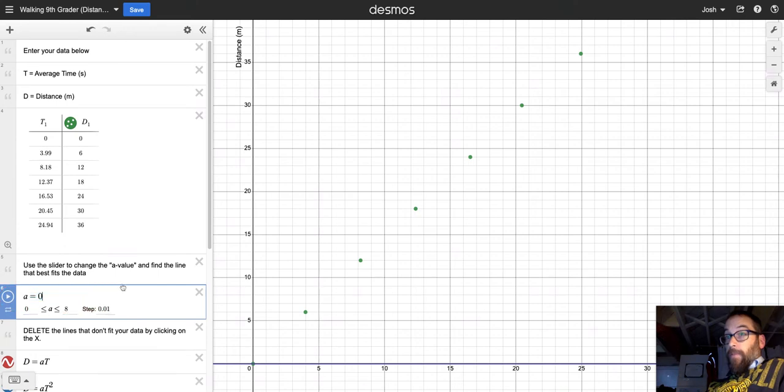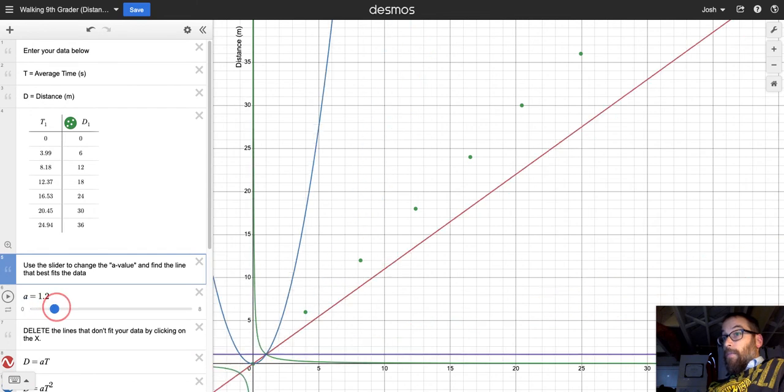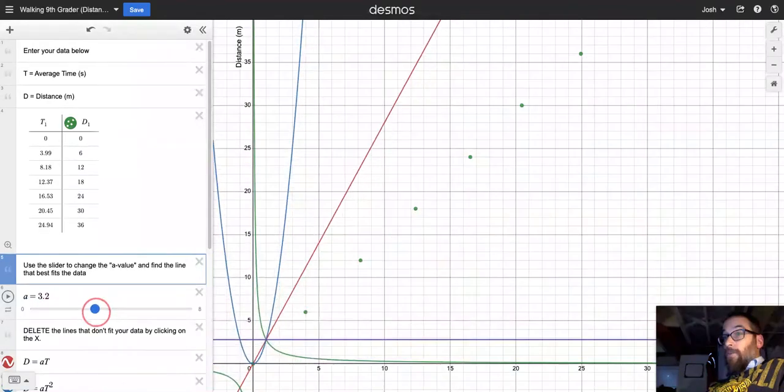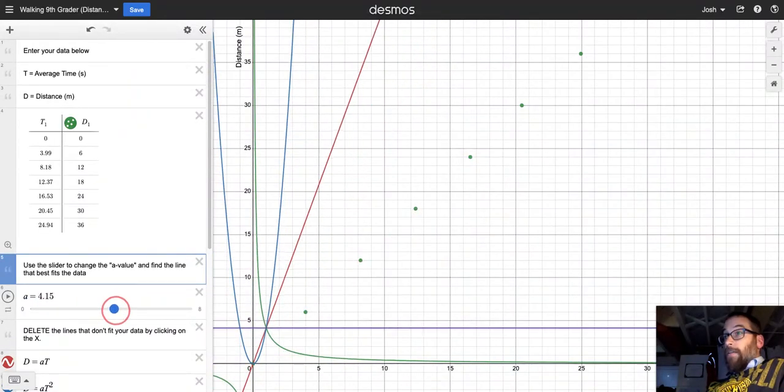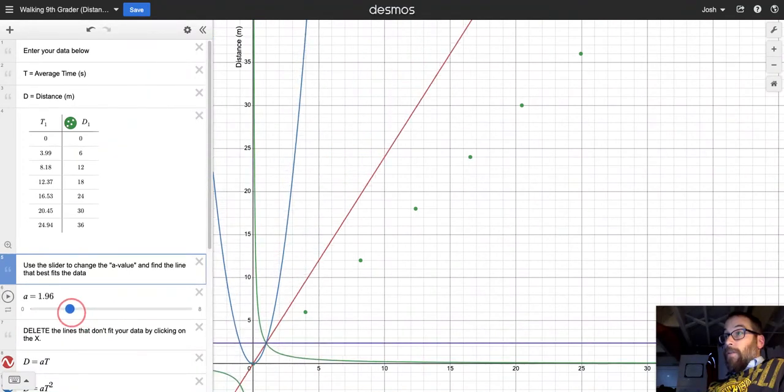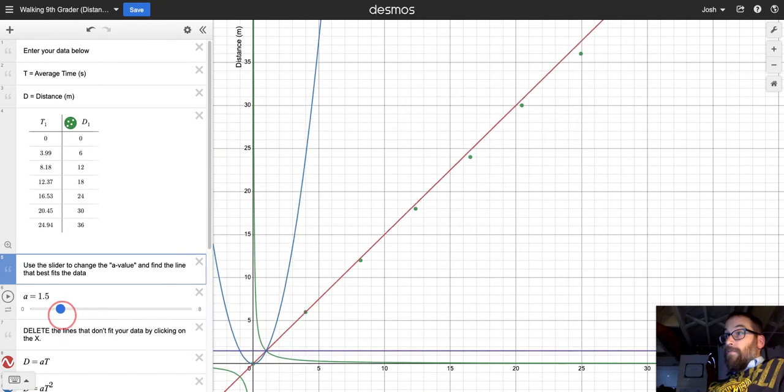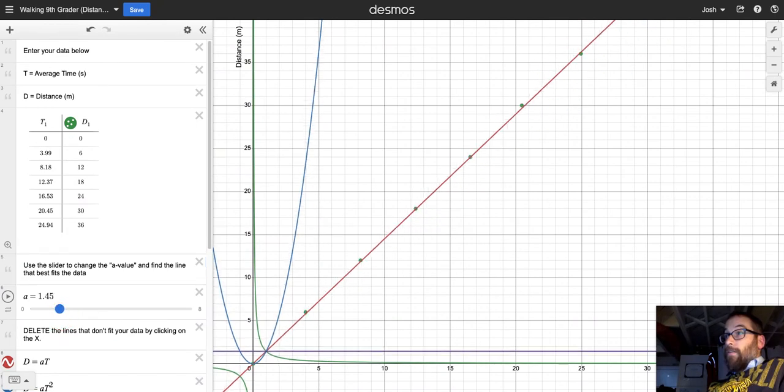Right here, and then it has underneath that a dot which is a slider. If you click and drag this, it does two things: it changes the value of A and it moves lines across your axis. The next step is to match one of those lines to your data. As you can see, it looks like the best fit is the red line. Okay, so now we have a line of best fit.